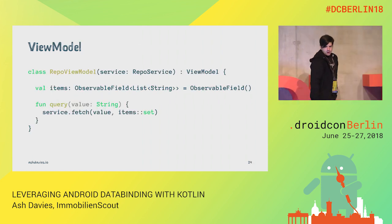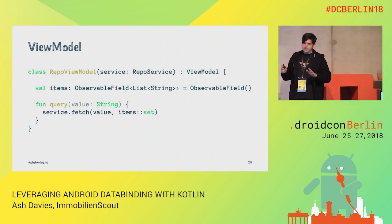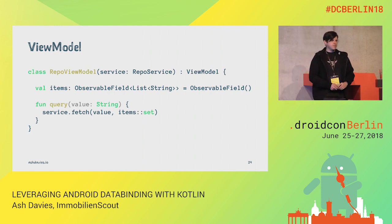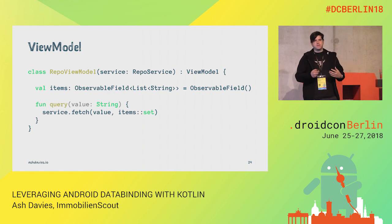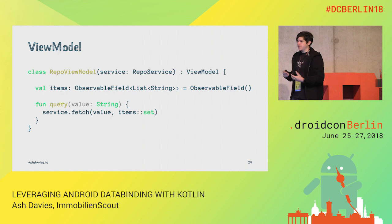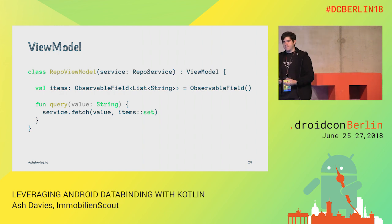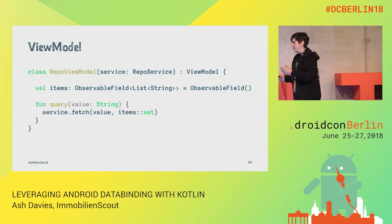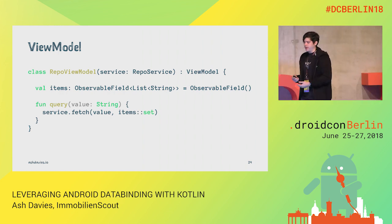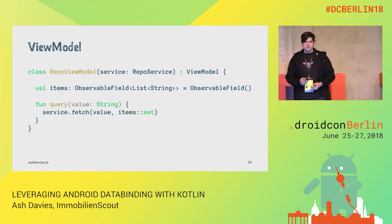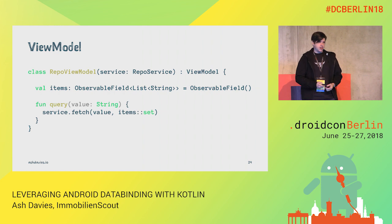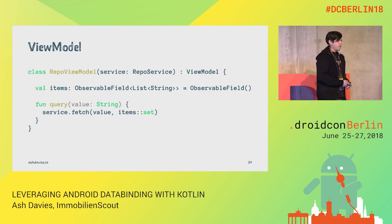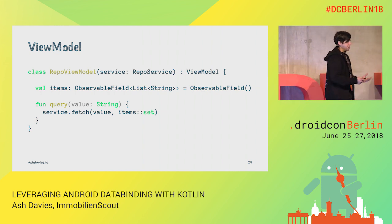Let's look at our view model. This is a basic implementation and we have the observable field. Data binding provides observable fields that we can use as a wrapper to notify data binding of a property change. There are a lot of primitive types, like ObservableBoolean, ObservableByte, ObservableChar, and others, but mostly I want to use ObservableField.